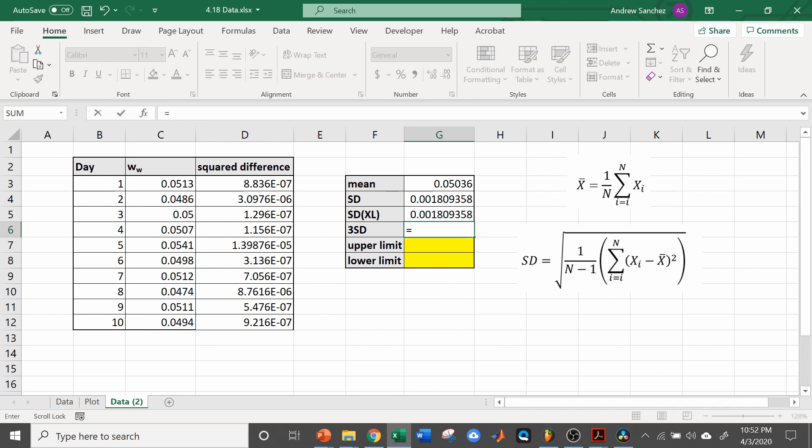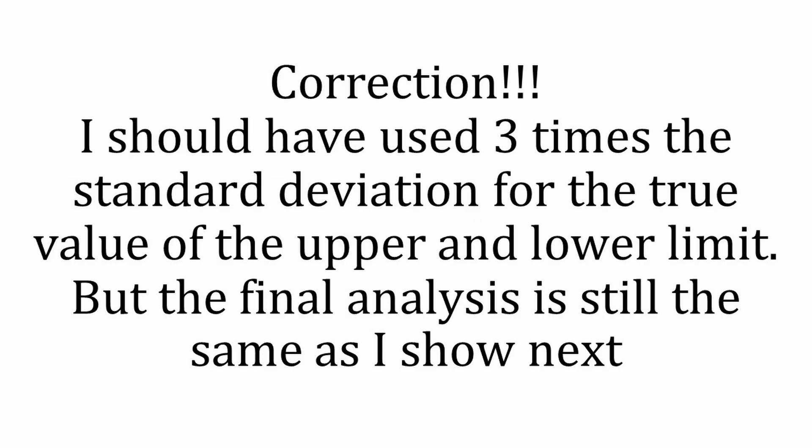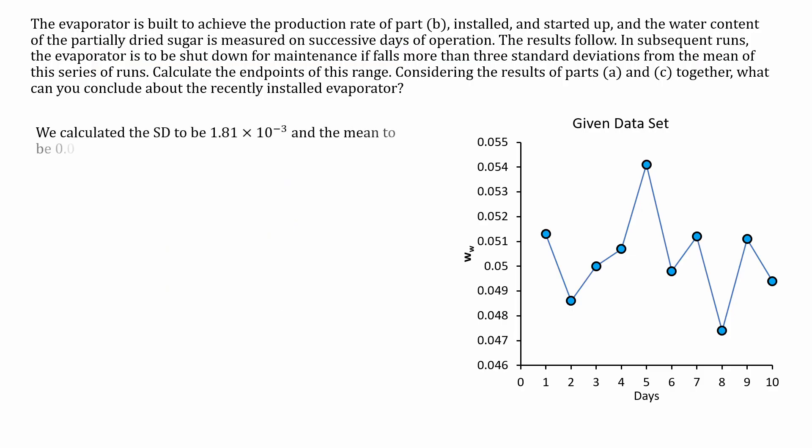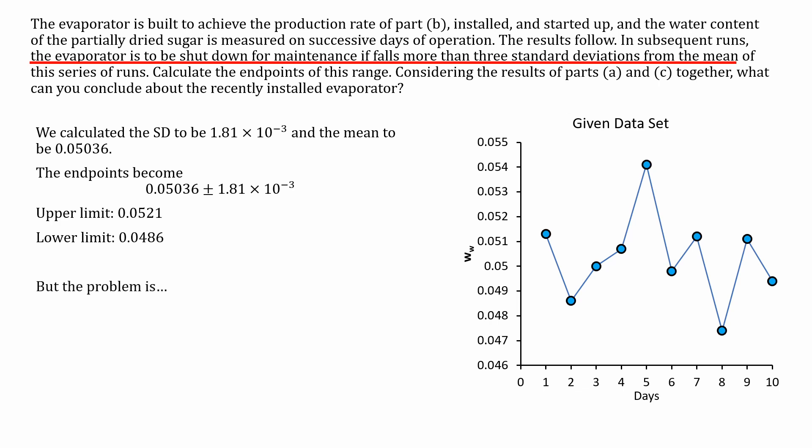Now we calculate three times that because we need to calculate three standard deviations according to the problem, which is this. Now to calculate the upper limit, we add the mean plus standard deviation, and the lower limit is the mean minus the standard deviation. So we calculated the standard deviation to be 1.13 times 10 to the negative 3, and the mean to be 0.05036. Now it says the evaporator is to be shut down for maintenance if it falls more than three standard deviations from the mean. So that means the endpoints become 0.05036 plus or minus the standard deviation, which we calculate the upper limit to be 0.0521, and the lower limit to be 0.0486. But the problem is, we calculated the mass fraction of water in the third stream to be 0.0306, which is lower than the lower limit.